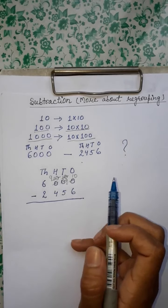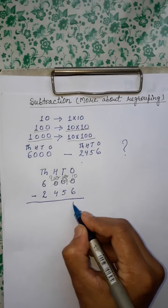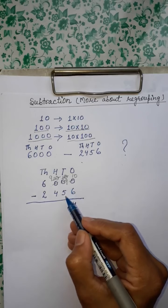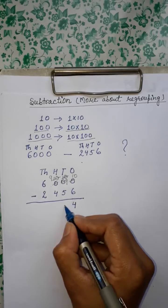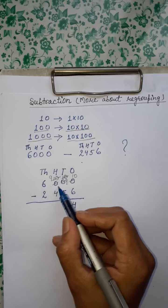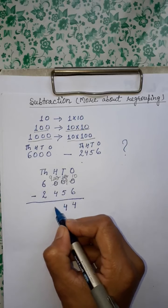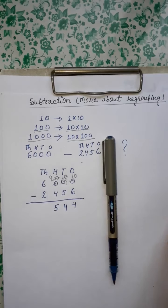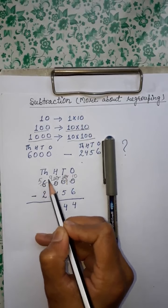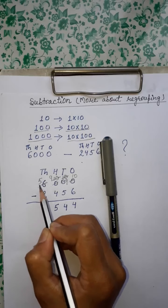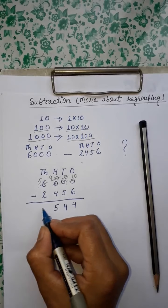Ab sabhi ke paas ho gaya — ab kya karenge? When we subtract 6 from 10 we get 4. Like that, when we subtract 5 from 9 we get 4. Next, when we subtract 4 from 9 we get 5. And at last, jo ki 1000 ne sab ko diya — khud uske paas 5 reh gaya. When we subtract 2 from 5, we get 3.